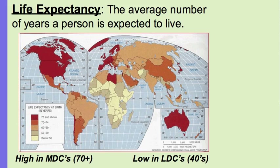Life expectancy is the average number of years a person is expected to live from birth. We typically see high numbers — higher than 70 — in Western Europe, North America, and Australia, and then very low numbers in places like Africa.